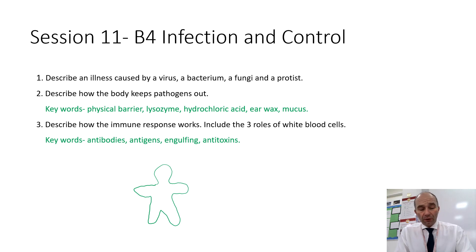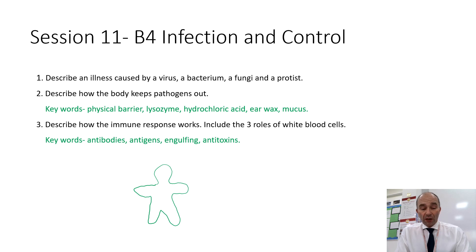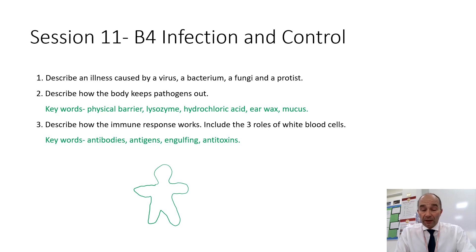Your third activity is to describe how the immune response works. You need to include the three roles of the white blood cells. If you want, you can do this as a diagram, a bit like a cartoon — that can be a good way to show it. Your key words are: antibodies, antigens, engulfing, and antitoxins.